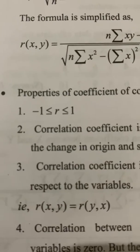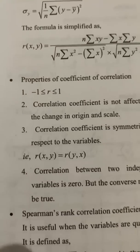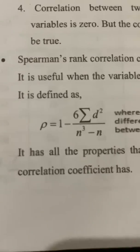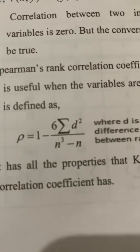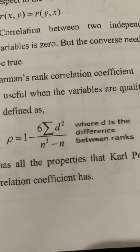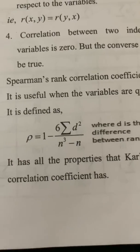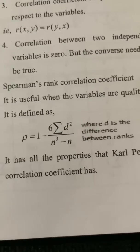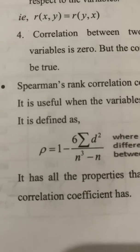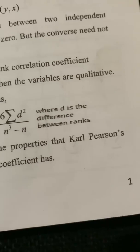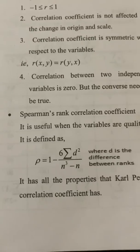R is equal to the correlation coefficient. The Spearman rank correlation formula is: R equals 1 minus 6 times sigma d-squared divided by n cubed minus n, which equals n(n-squared minus 1). Here d is the difference of ranks, and d-squared is the square of that difference.